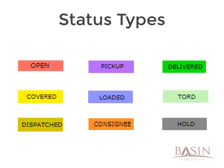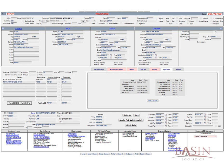Now that you have a basic understanding of the track and trace process, we can show you the walkthrough. To start the process, click on the status box of the load you are tracking. After you have clicked on the status button, the load will open so you can view the details.